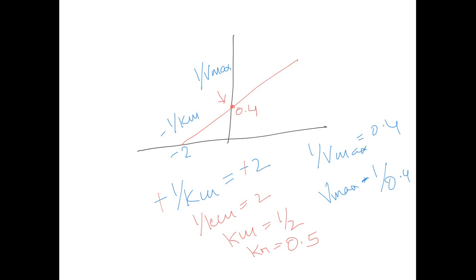So with that, Vmax equals 1 over 0.4 and that will be 10 over 4. If you simplify 10 over 4 you get 2.5. So this is what is the value for Vmax. Vmax is 2.5 and Km is 0.5.